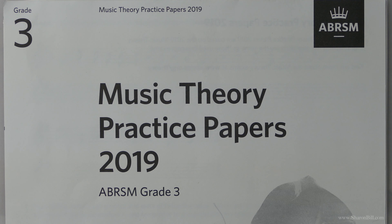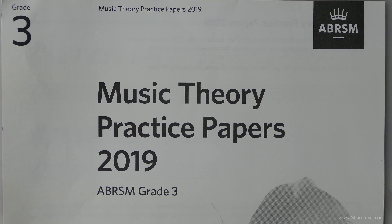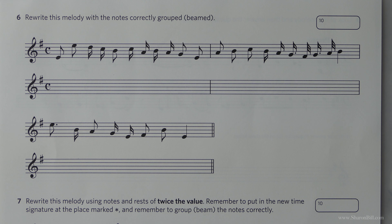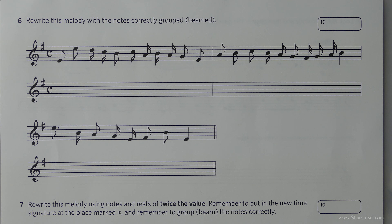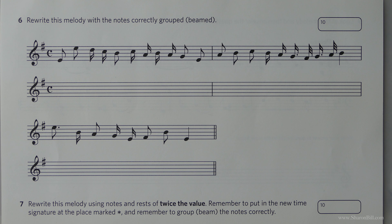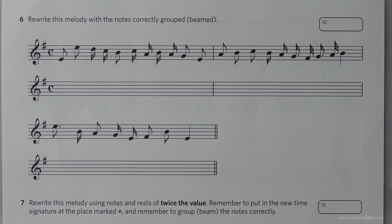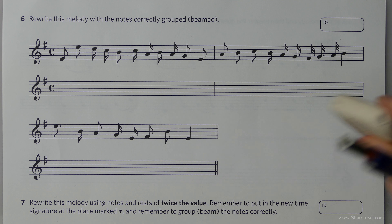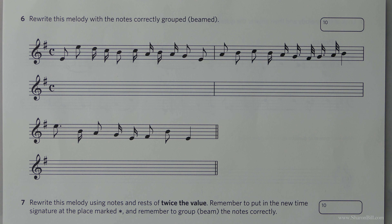So if you turn with me to page 17 in the 2019 grade 3 practice paper book, we can look at this together. I always say this and I do hope you'll forgive me repeating myself, but it really is better to just try this on your own first of all. It doesn't matter if you go wrong — it's always better to learn by your mistakes. Always work in pencil and then you can just rub out anything that's not gone quite right, and you'll learn much more thoroughly by making those mistakes. And so now we can check through these together.